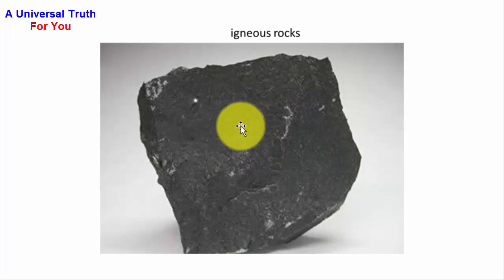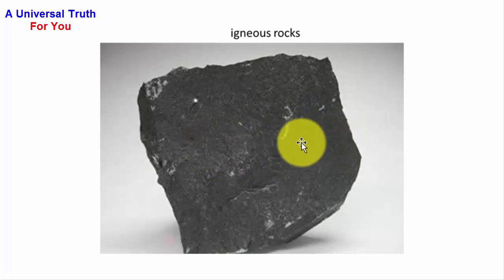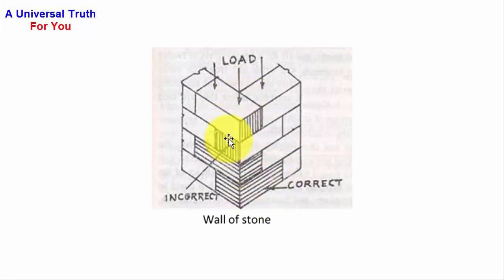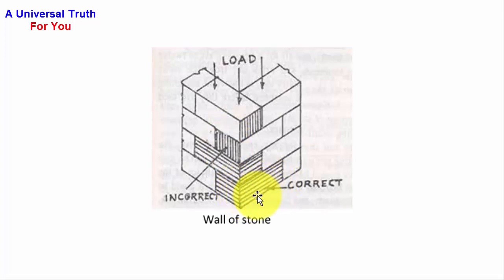In igneous rocks, the natural bed is difficult to determine — it is not easy to tell whether the natural bed is horizontal or vertical. You can see the wall of stone figure, where the load is perpendicular to the natural bed. If the load is applied along the natural bed, that is incorrect because the wall is not good for bearing the load. If you place the stone correctly, the wall and stone have much better strength for bearing any load.